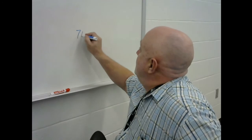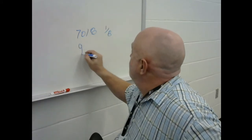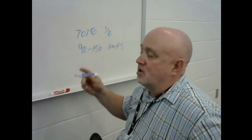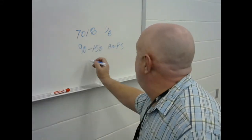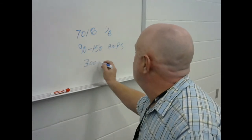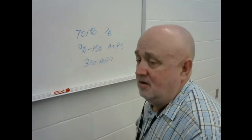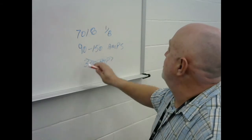The manufacturer's recommendation for 7018 1/8-inch is between 90 and 150 amps. So if I'm writing a WPS with that, does it make sense to have an amperage on there for the welder to follow of 300 amps? No, that doesn't make sense. Codes don't ever say this explicitly, and this is my interpretation, but a lot of it is act with common sense and act like a grown-up. So for this one, 90 to 150 amps.